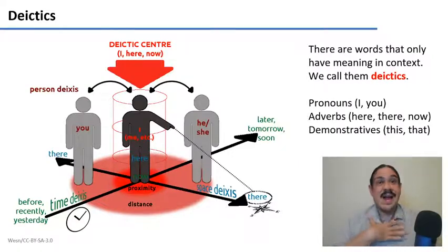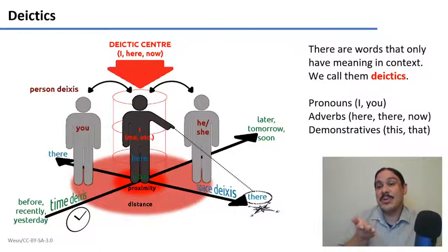For example, pronouns like I or you. The word you only has meaning when we know in the conversation who you are.